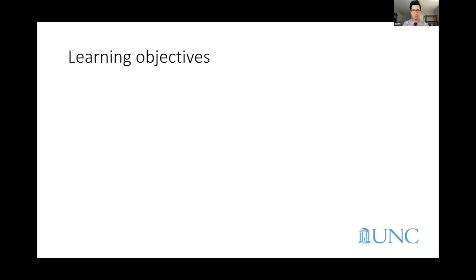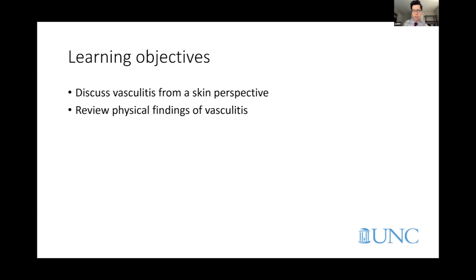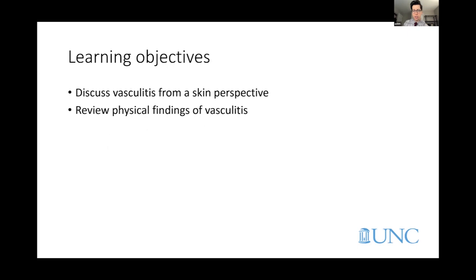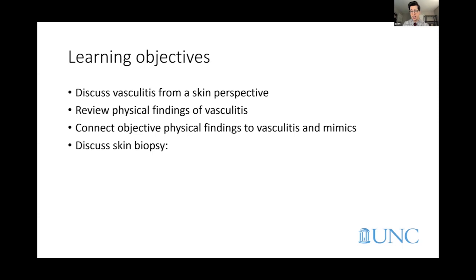Our goal today is to talk about vasculitis from a skin perspective. We'll review what we see on the skin from vasculitis, going through anatomical details that help us understand what we're seeing — connecting what's going on microscopically to what we're seeing on a patient's skin. We'll talk about ways we evaluate patients, including the skin biopsy: what it's for, when it's valuable, and how to be careful in interpreting it.